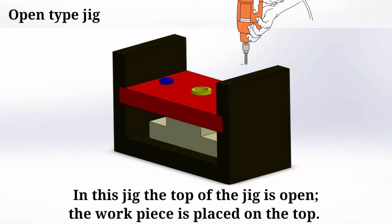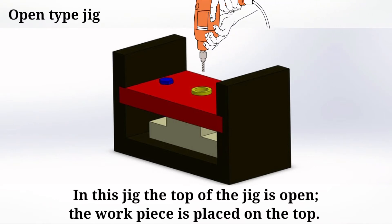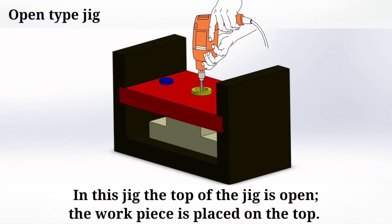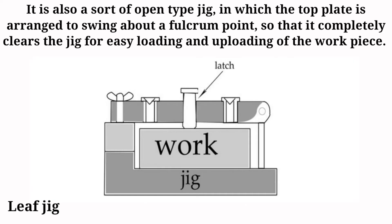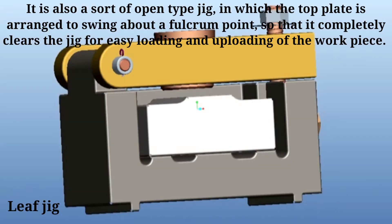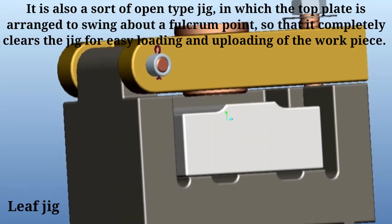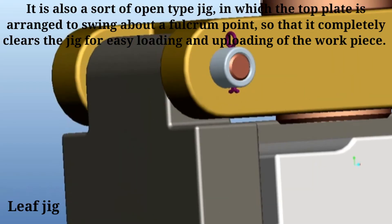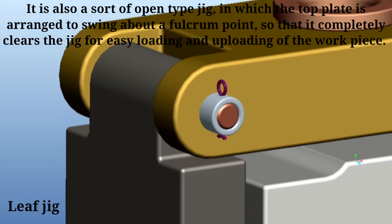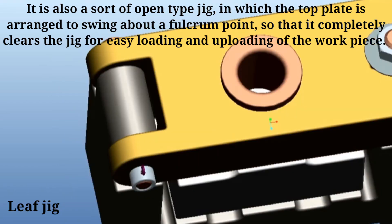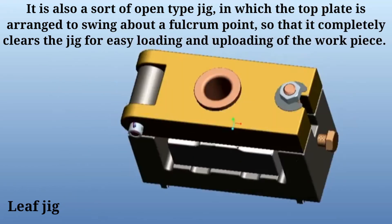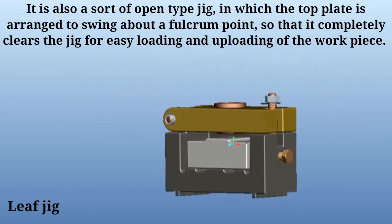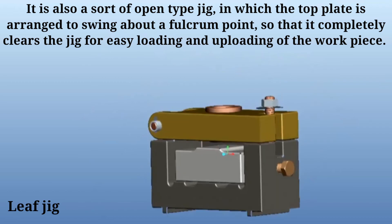The Leaf Jig is also a sort of open-type jig, in which the top plate is arranged to swing about a pivot point, so that it completely clears the jig for easy loading and unloading of the workpiece.